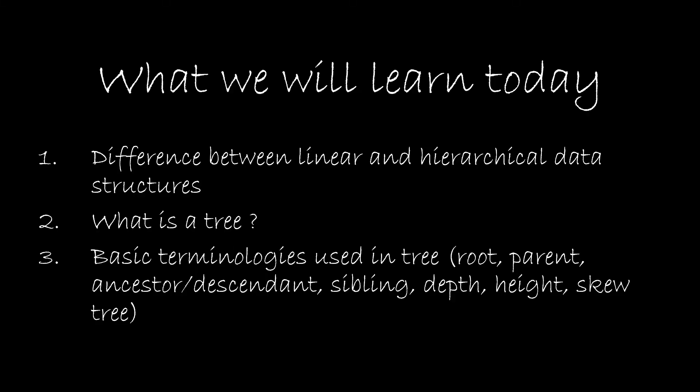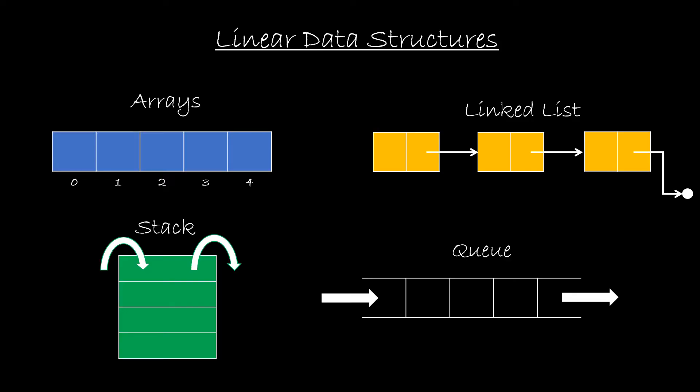Here are a few examples of linear data structure. Array is a fixed-size, index-based data structure that stores data in linear fashion. While linked list holds a reference to its neighbor and allows growing and shrinking. Stack and queue also allow operations on the elements in linear fashion in LIFO and FIFO order.